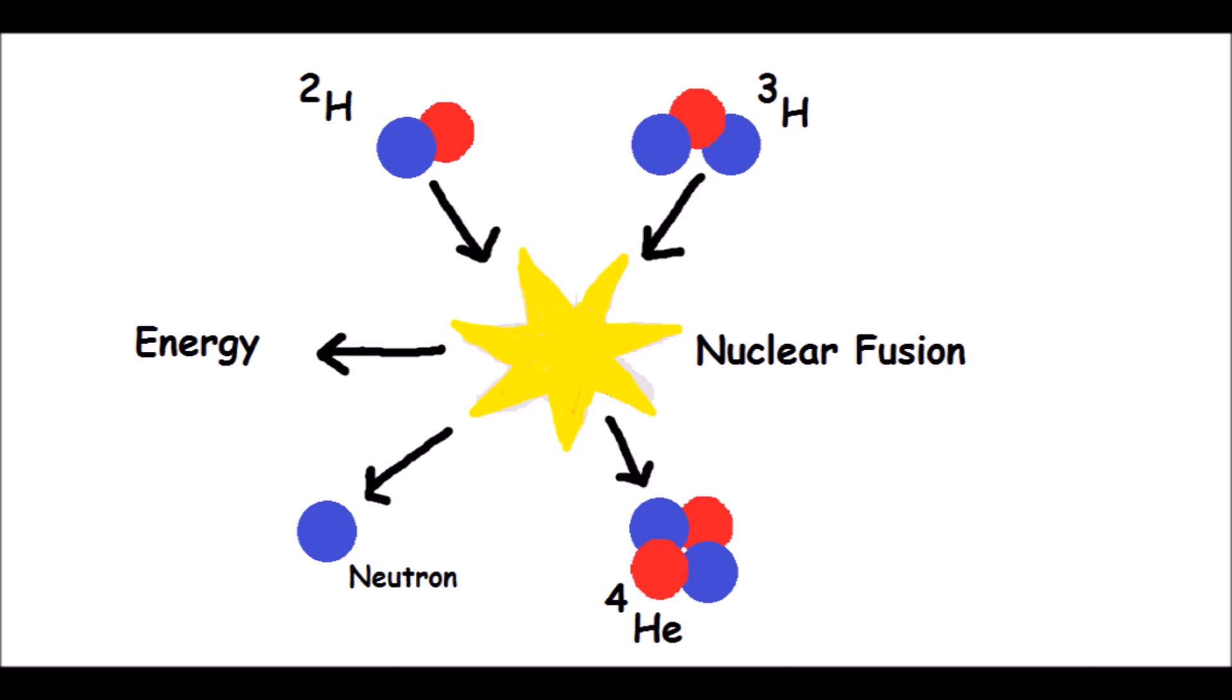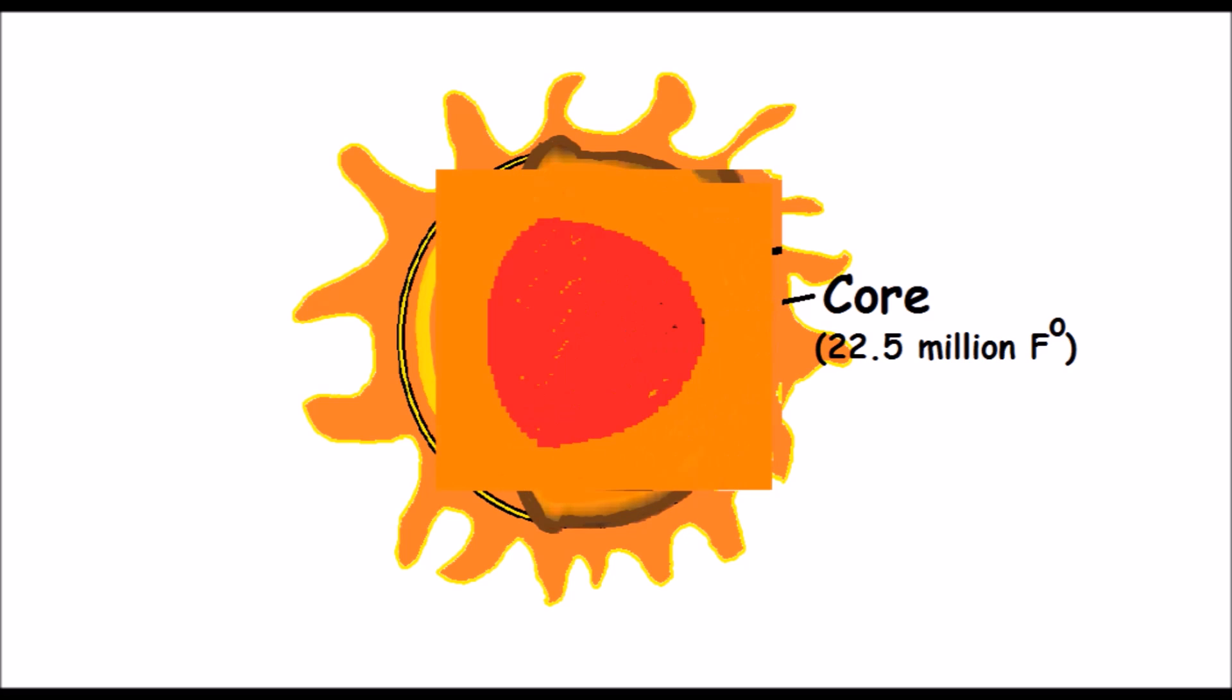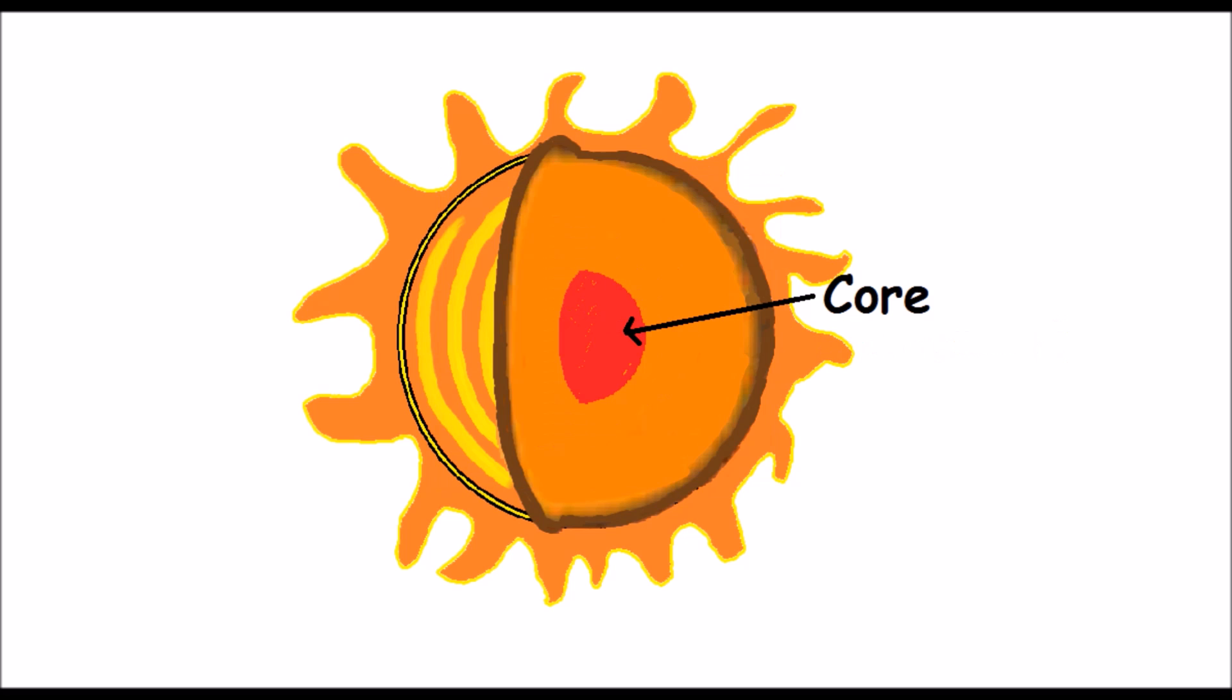There are many layers inside our Sun. The hottest part of the Sun is its core or center. In the core, fusion reactions produce energy in the form of gamma rays and neutrinos. Outside the core is the radiative envelope, which is surrounded by the convective envelope.